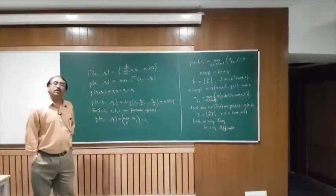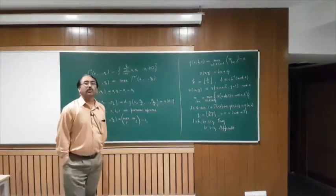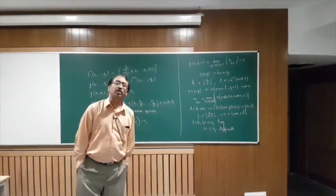It's well known and Sylvester must have proved this that g of a1 a2 is a1 a2 minus a1 minus a2.